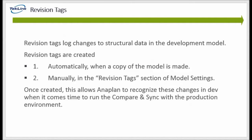Now let's talk about revision tags. If a developer creates added functionality with updates to the structural data in a model with plans to launch these changes into the production environment, a revision tag must be created. A revision tag is a snapshot of a model's structural data at the point in time the tag was created. This is done in the dev instance to log any changes that have been made so those changes can be promoted into the production environment. There are really two ways to create a revision tag: Anaplan will automatically create a revision tag when the model is copied, or you can manually create one under revision tags in the model settings tab. Creating these revision tags allows developers to reference back to the added capabilities and features in the dev model before launching the changes into the production model.